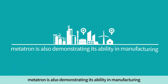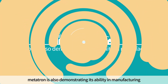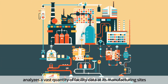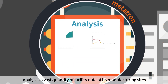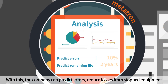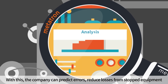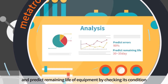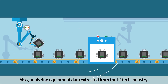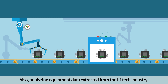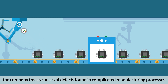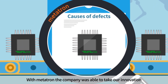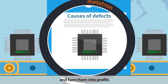Metatron is also demonstrating its ability in manufacturing. Global Corporation C analyzes a vast quantity of facility data at its manufacturing sites. With this, the company can predict errors, reduce losses from stopped equipment, and predict remaining life of equipment by checking its condition. Also, by analyzing equipment data extracted from the high-tech industry, the company tracks causes of defects found in complicated manufacturing processes. With Metatron, the company was able to take innovation and turn it into profits.